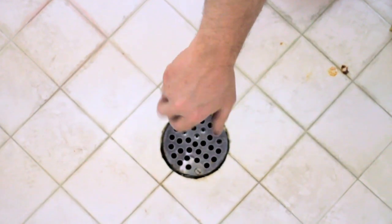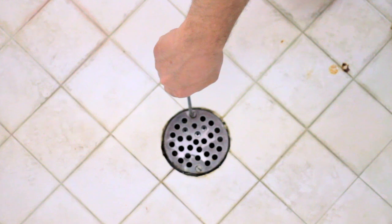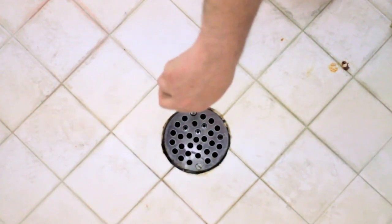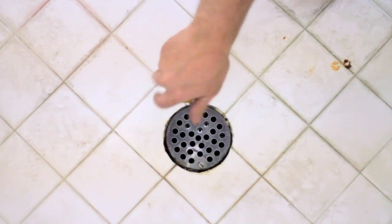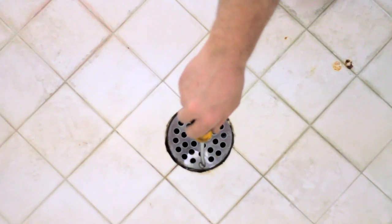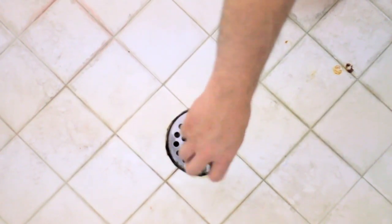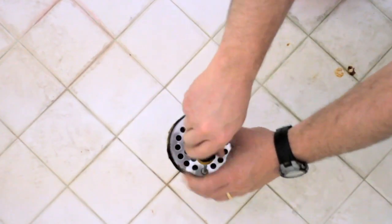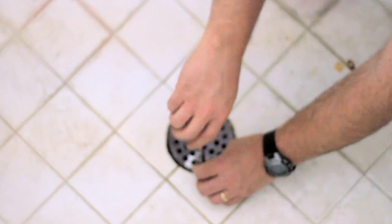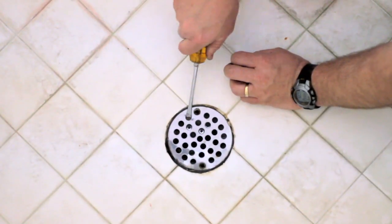is remove the shower drain strainer. You usually have two screws, one on each side. If yours does not have screws, it may be the kind that just simply pops on and they just pop into place. You just need to get a screwdriver and pry that kind open.